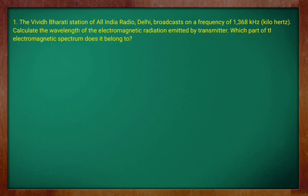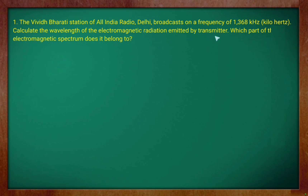Let us discuss a few questions on how to find the frequency or wavelength for a particular radiation of the electromagnetic spectrum. The question is: the Vivid Bharati station of All India Radio Delhi broadcasts on a frequency of 1368 kHz. Calculate the wavelength of electromagnetic radiation emitted by the transmitter. Which part of the electromagnetic spectrum does it belong to? From the question, the frequency of radiation represented by nu is equal to 1368 kHz.